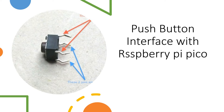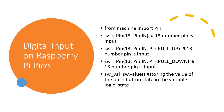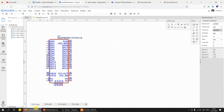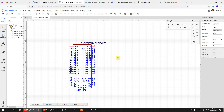Now let's see how you can interface a button with Raspberry Pi Pico. A button essentially is nothing but a digital input, and this is the sample code we are going to use in order to create a digital input. Before we do that, let us first try to understand how the digital input can be read.